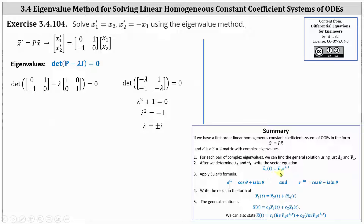Next, we apply Euler's formula to e to the power of lambda sub i times t, recalling that lambda sub one is a complex number. We write the result in the form x one of t equals x three of t plus i times x four of t, separating the real part and the imaginary part. Then x three of t and x four of t are two linearly independent solutions, and the general solution is x of t equals c one times x three of t plus c two times x four of t.